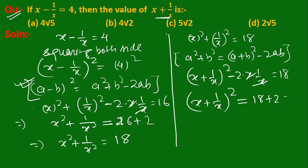This equals 20. So therefore x plus 1 upon x is equal to root 20, which is 2 root 5.